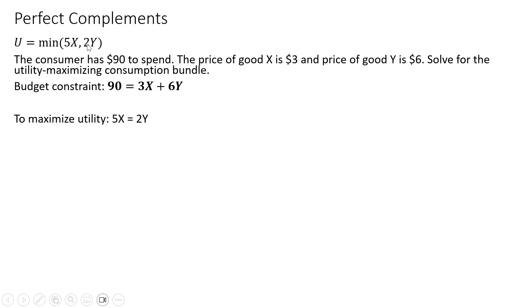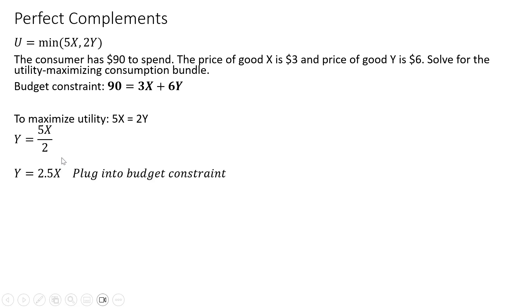To maximize utility, we take what's in parentheses and set them equal to one another — that must hold. So we set 5X equal to 2Y and solve for Y. Dividing both sides, Y equals 5X divided by 2, or Y equals 2.5X.